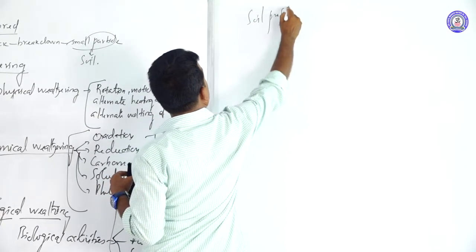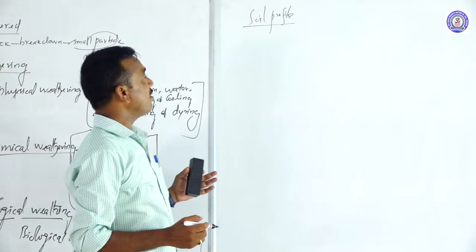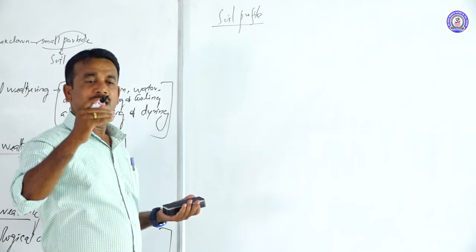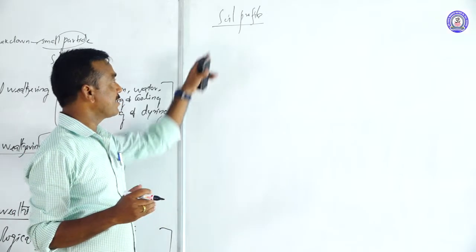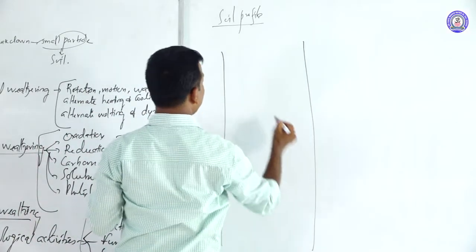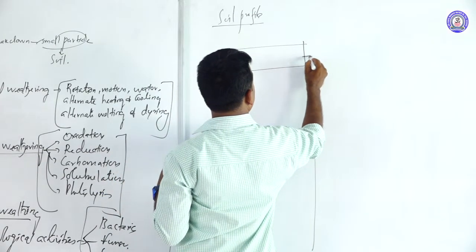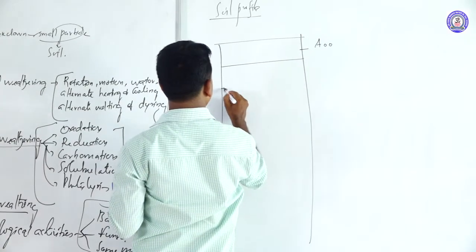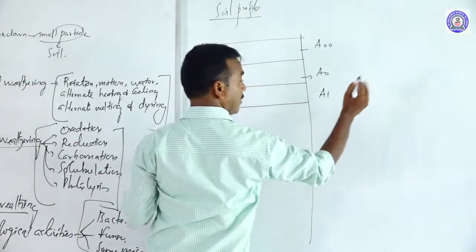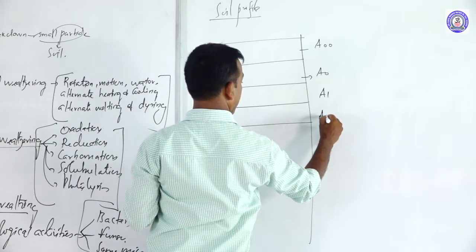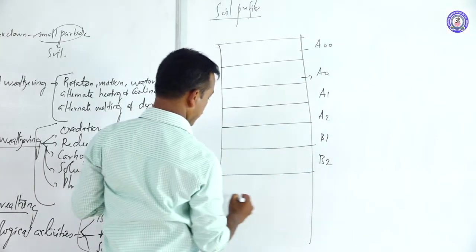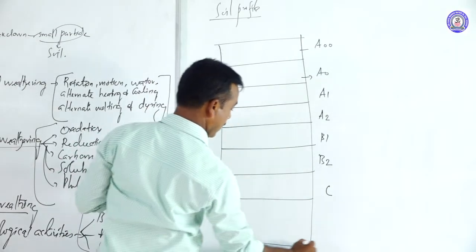Next: soil profile. The soil contains so many kinds of layers arranged one above the other — that is the soil profile. The regions that occur in the soil profile are: A00, A0, A1, A2, B1, B2, C, and R.